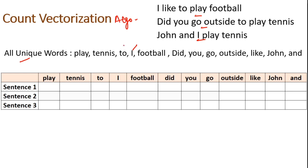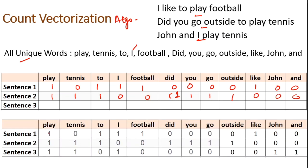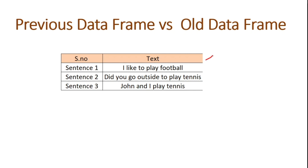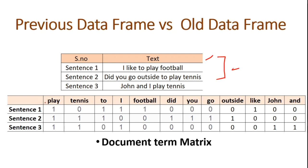For each sentence, I count how many times each unique word appears. For sentence 1, 'play' comes once, 'football' once, 'I' once, and other words are zero. For sentence 2, 'did', 'you', 'go', 'outside', 'play', 'tennis', 'to' each appear once. This creates a data frame with only 0s and 1s — or higher numbers if a word appears multiple times. This is called the document term matrix, and it is the result of count vectorization.